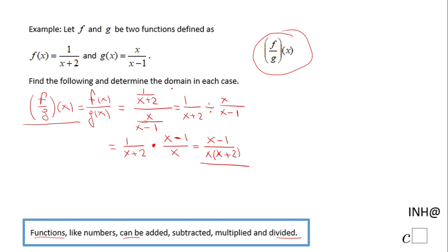For the domain of this function, if you look at the result, x cannot be zero because the rational expression becomes undefined. X also cannot be negative 2 for the same reason.